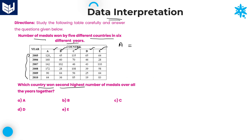For Country A, adding all values at the units place: 2 plus 2 is 4, plus 4 is 8. Then at the tens place: 2 plus 6 is 8, giving 12, then 19, plus 6 is 25, plus 9 is 34. Carry forward 3. Adding the hundreds: 3, 4, 5, 6, 7. So Country A equals 748.